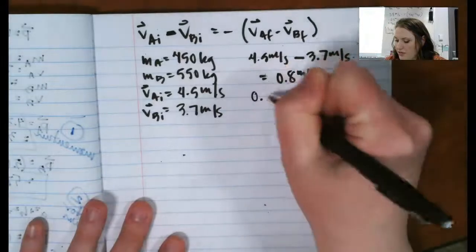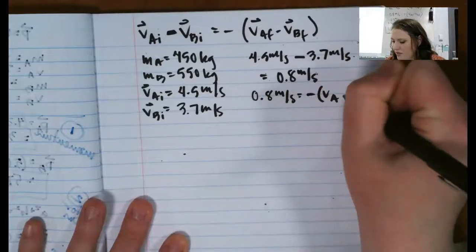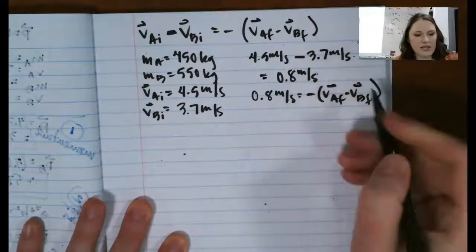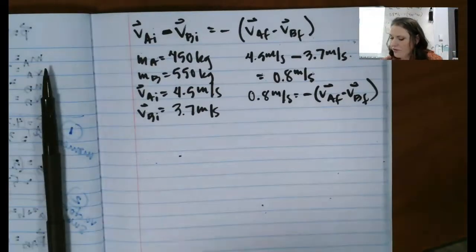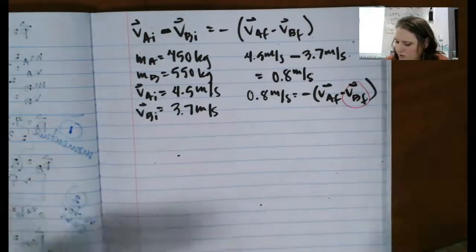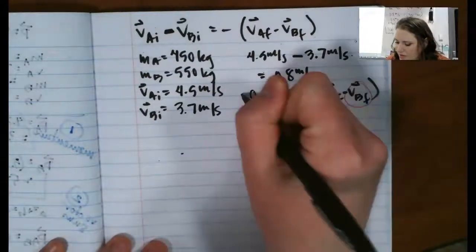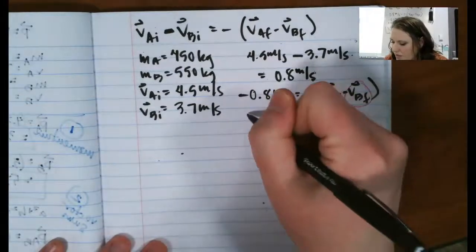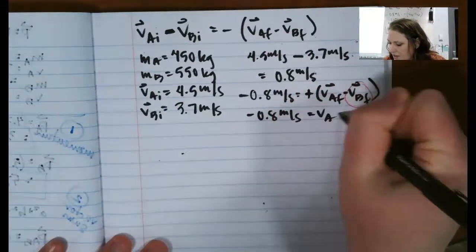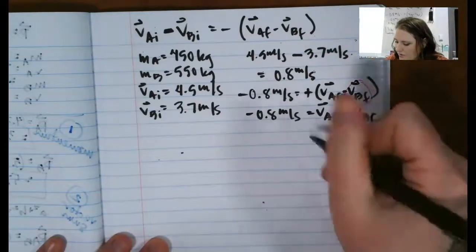Alright, so 0.8 meters per second is equal to negative times this difference. So I'm going to solve, like I said, let me give another color for a second, for velocity B here, so that I can substitute that into my equation here. So I've got a negative sign, I'm just going to flip that over to the other side, negative 0.8 meters per second. I like doing all my algebra, so that way I don't make mistakes. So I'm going to flip that over.